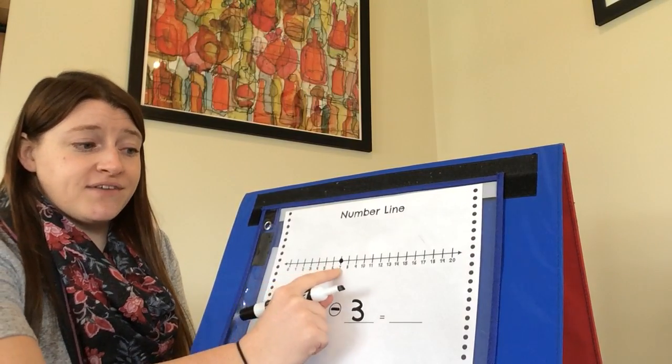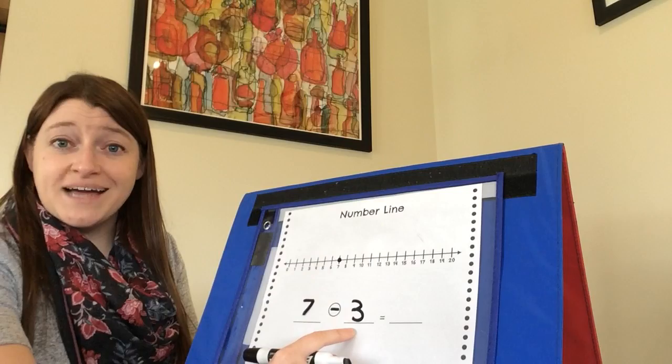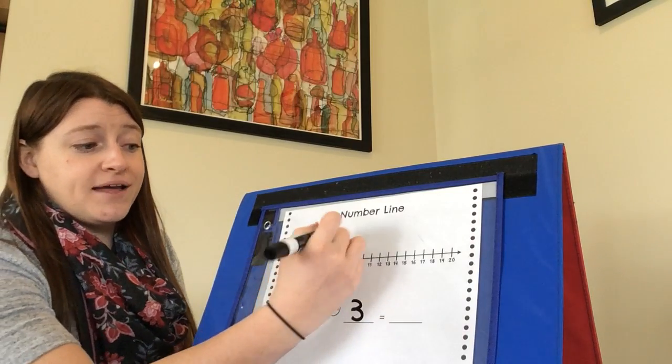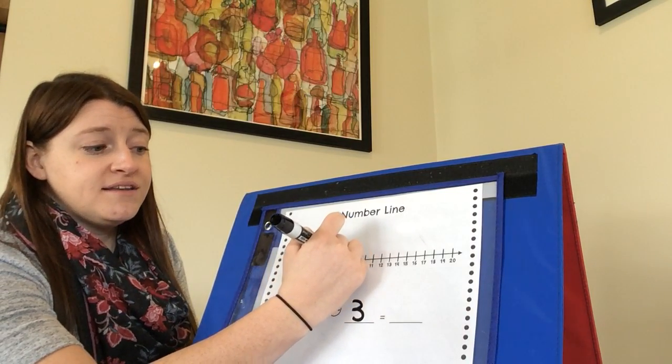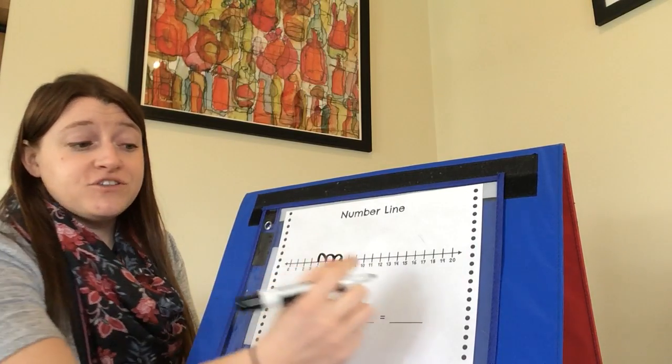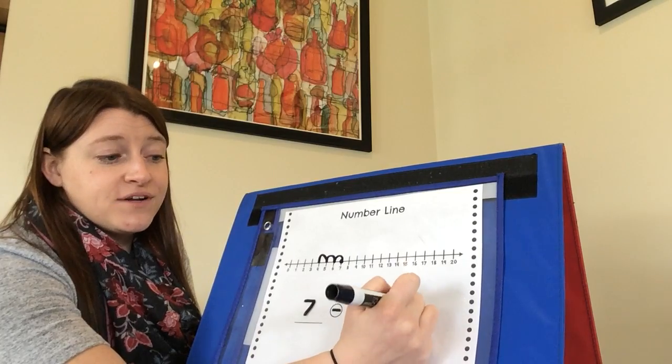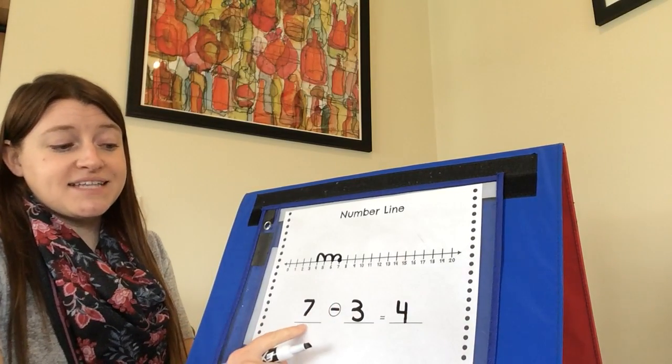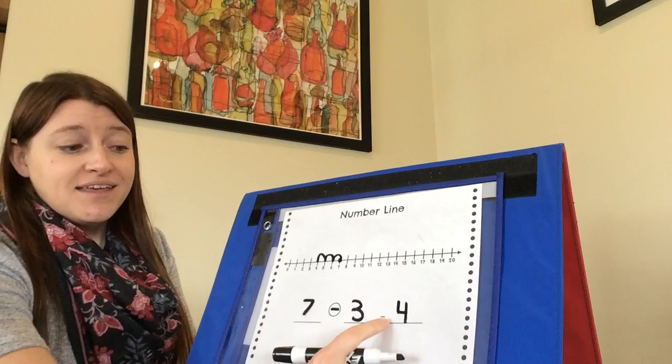So our dot is on the number seven and now we're going to hop three times backwards on the number line. One, two, three. I ended on the number four, so that tells me that four is the difference in my problem. Seven minus three equals four.